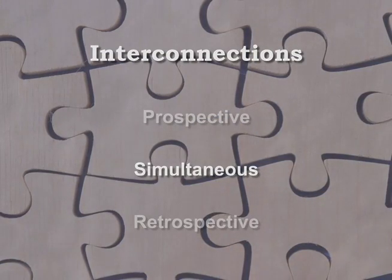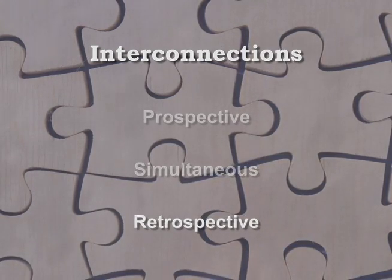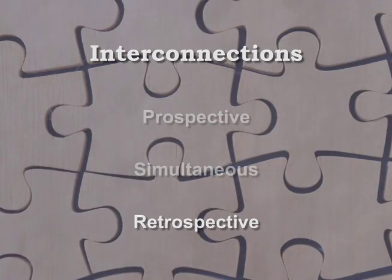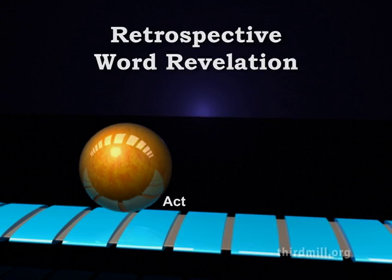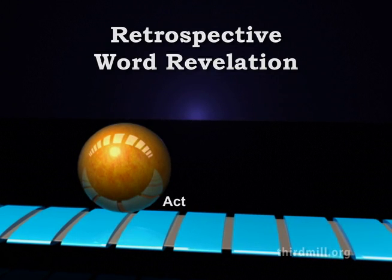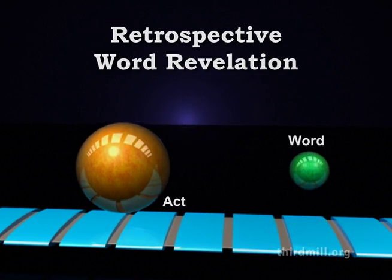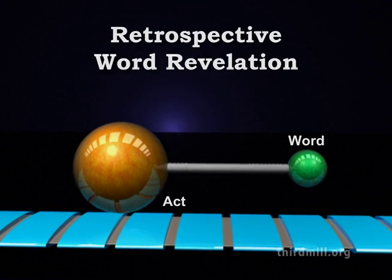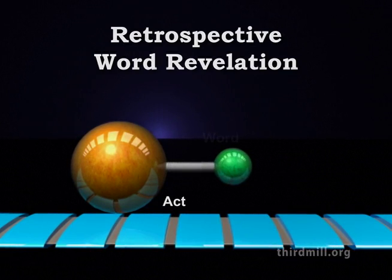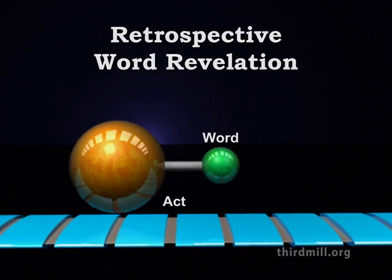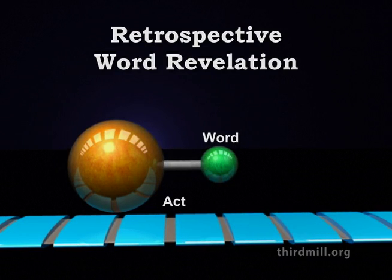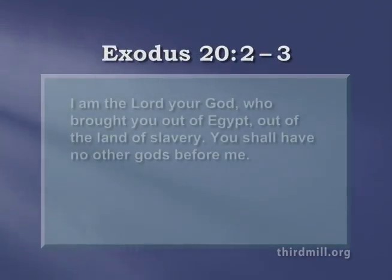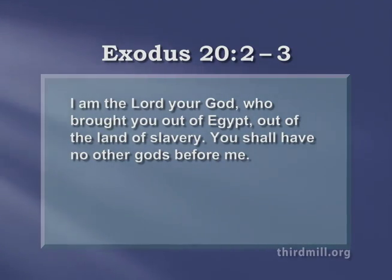In the third place, God's word revelation is often retrospective — explaining the significance of events after they have taken place. On the whole, this is the most frequent way divine word revelation comes to us in Scripture. Sometimes God spoke approximately, just after an event had occurred. In Exodus chapter 20 verses 2 through 3, God explained the significance of Israel's deliverance from Egypt just after it had taken place: "I am the Lord your God who brought you out of Egypt, out of the land of slavery. You shall have no other gods before me." The Lord explained that their experience was no ordinary event — it was his personal and direct deliverance — and this word revelation also explained one of the implications: because God had delivered them, Israel should not worship other gods.